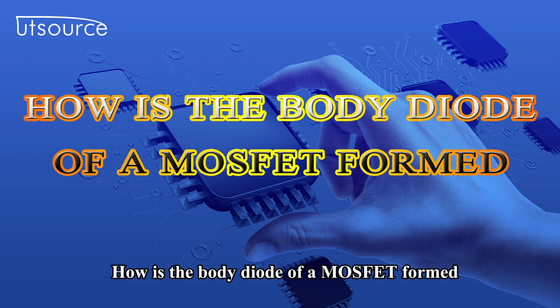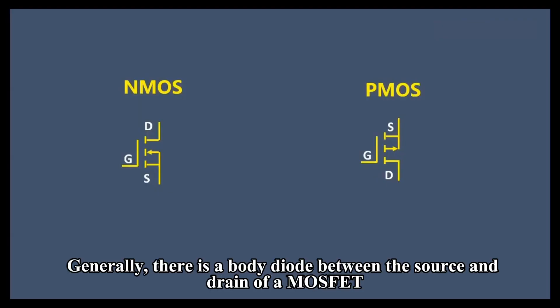How is the body diode of a MOSFET formed? Generally, there is a body diode between the source and drain of a MOSFET.